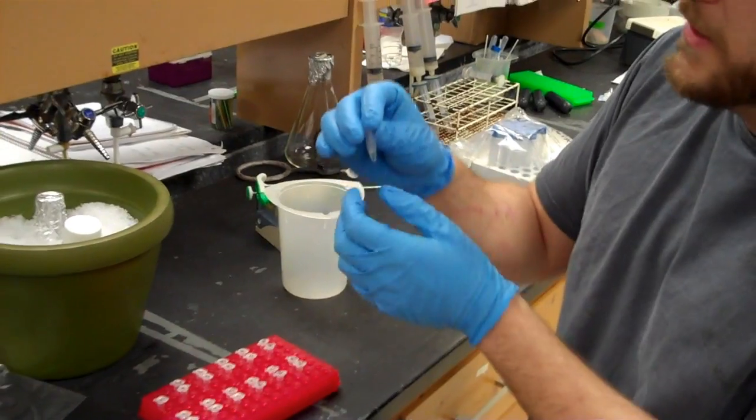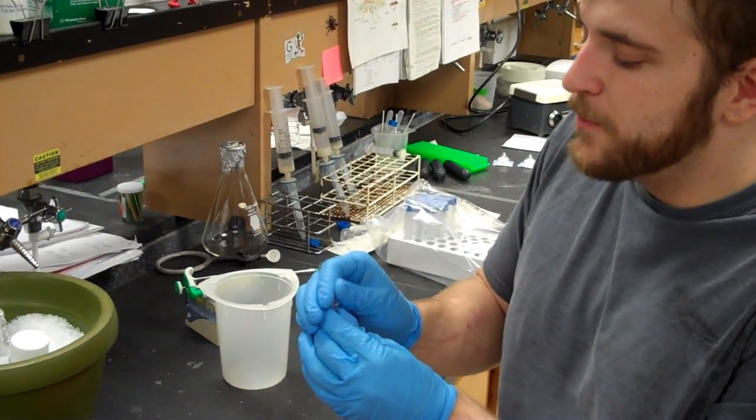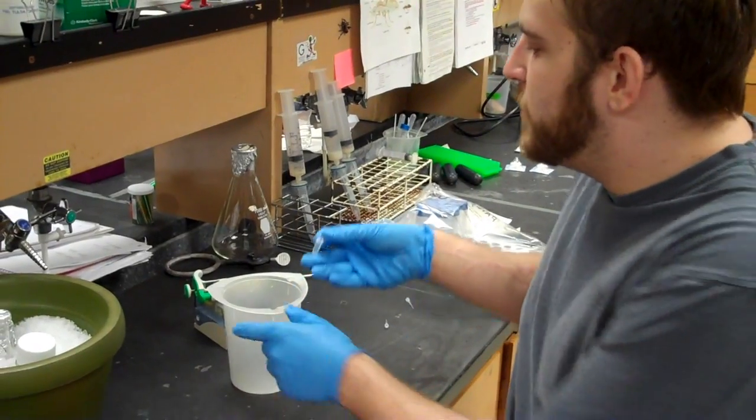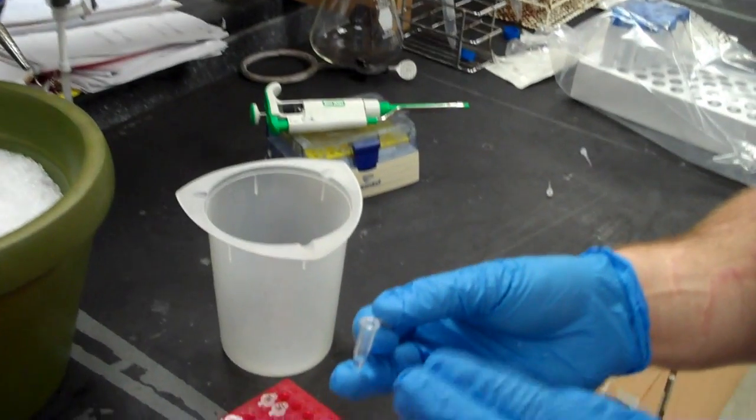The supernatant here is 95% ethanol, which is what's used to separate the oligonucleotides from the rest of the solution.